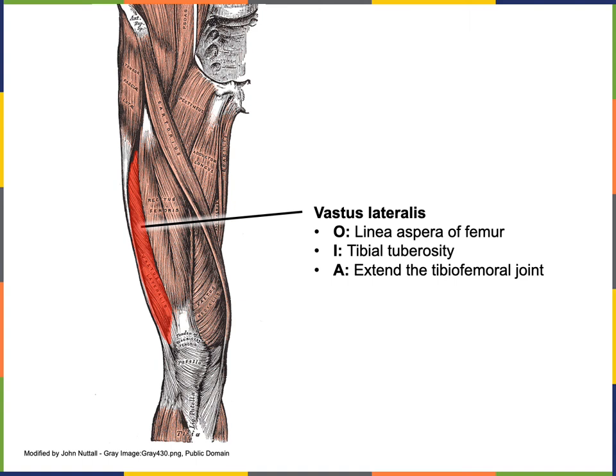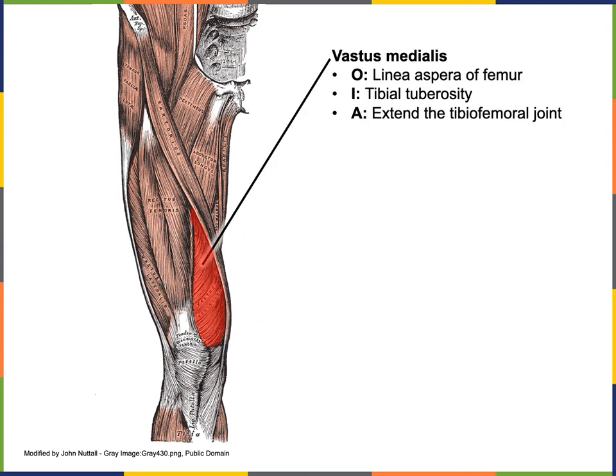Vastus lateralis has its origin from the linea aspera on the posterior of the femur, and inserts at the tibial tuberosity to perform the action of extension at the tibiofemoral joint. Vastus medialis also has its origin from the linea aspera of the femur, its insertion on the tibial tuberosity, and performs the action of extension of the tibiofemoral joint.